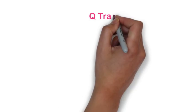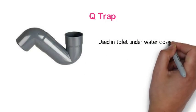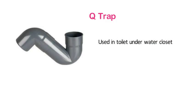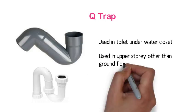Q trap. This trap is used in a toilet under the water closet. It is almost similar to the S trap and is used in upper storeys other than the ground floor.